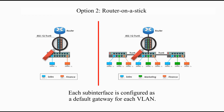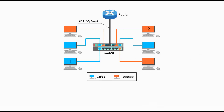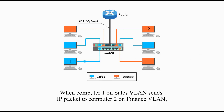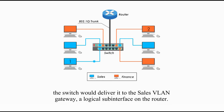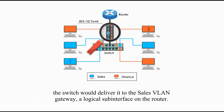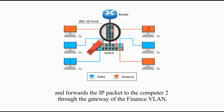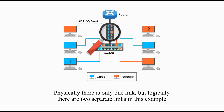Each sub-interface is configured as a default gateway for each VLAN. When computer 1 on the sales VLAN sends an IP packet to computer 2 on the finance VLAN, the switch would deliver it to the sales VLAN gateway — a logical sub-interface on the router. Then the router checks its routing table and forwards the IP packet to computer 2 through the gateway of the finance VLAN. Physically, there is only one link, but logically, there are two separate links in this example.